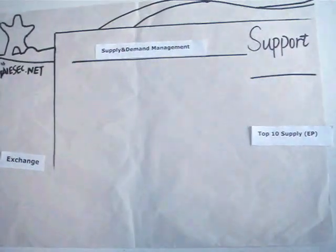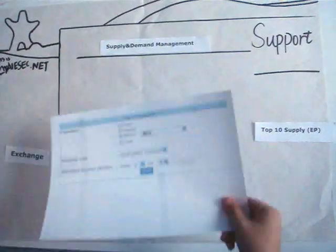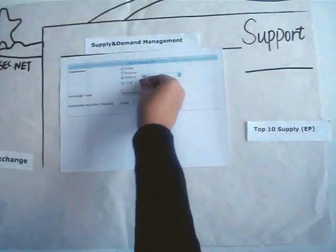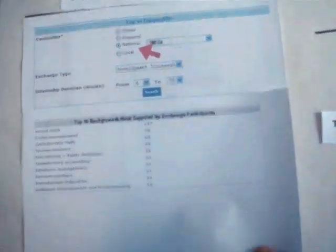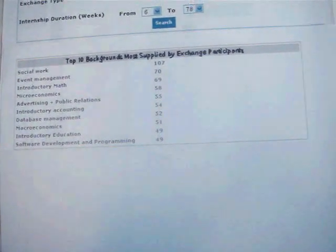On the EP side you can do the same. When you select top 10 supply EPs, choose the committee and the exchange type, you will see the top 10 EP backgrounds.